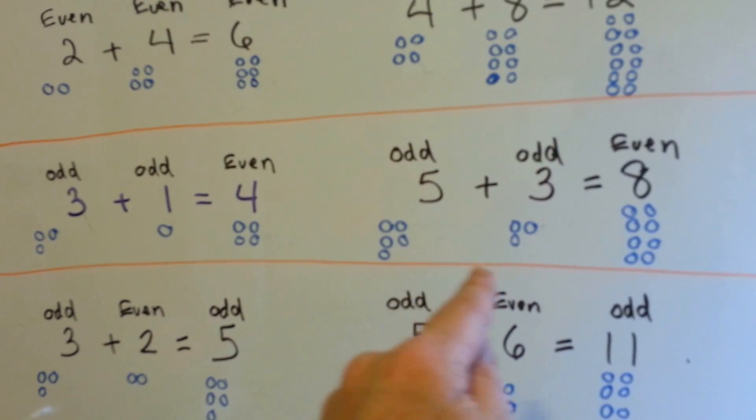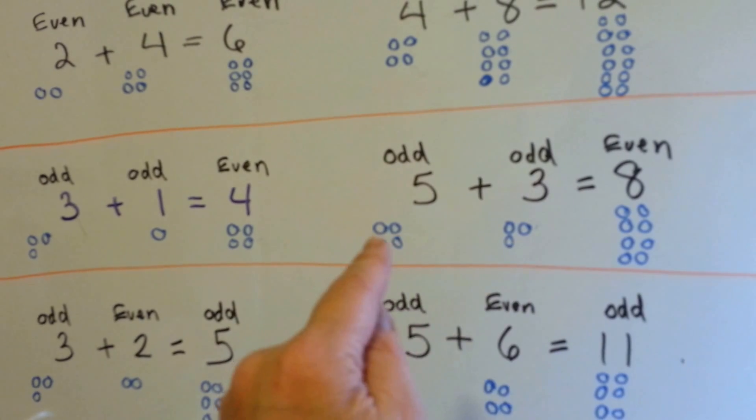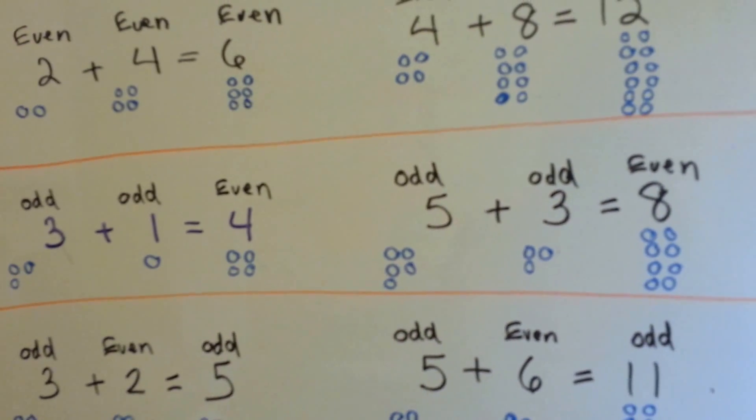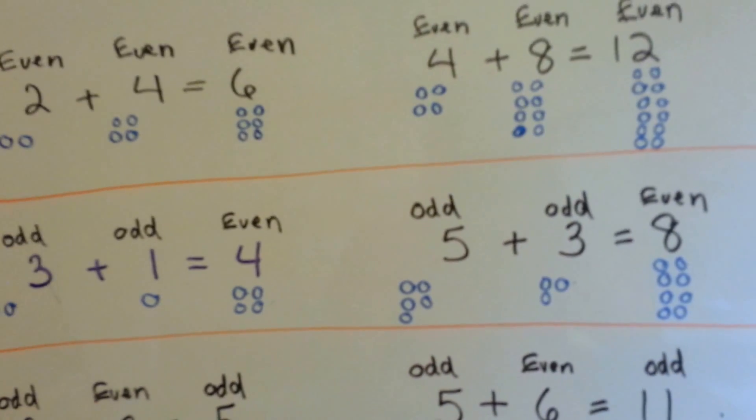5, this last one doesn't have a friend and neither does this one. 5 plus 3 equals 8, but these all have friends. So an odd number plus an odd number is an even number.